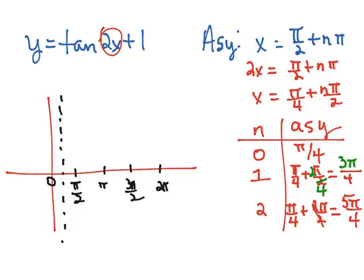We also have an asymptote at 3π over 4, which would be right in between π over 2 and π. We have an asymptote at 5π over 4, which would fall in between π and 3π over 2.